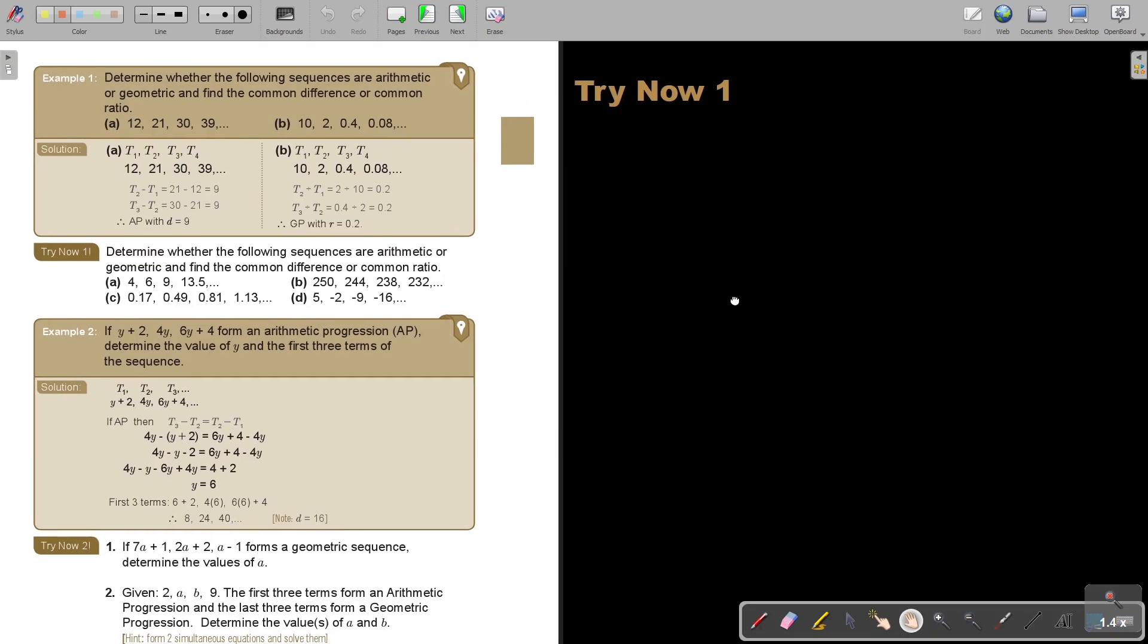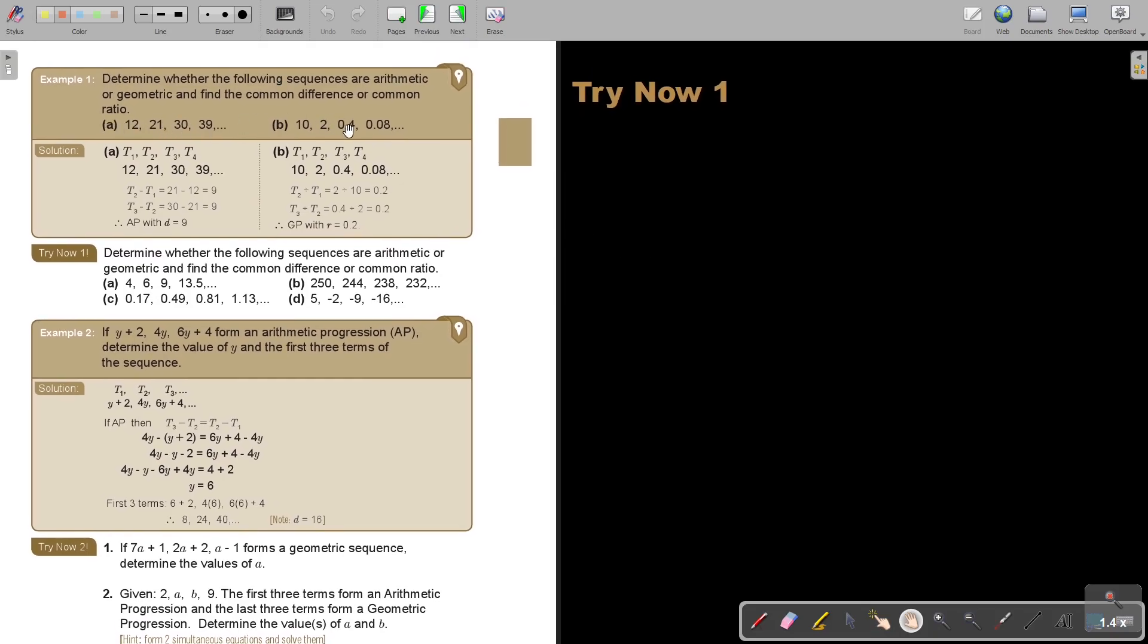If you just see a sequence, you will first determine if it's an AP or a GP. So, determine whether the following sequence are arithmetic or geometric and find the common difference or the common ratio. In this case, we are just going to do the test. You can first just subtract and see if you get every time 9. If you divide, you will see it's not working. It's not giving you a common ratio.